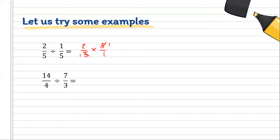We cannot divide 2 and 1, so we can now start multiplying. Multiplying fractions: top times top, bottom times bottom. So 2 times 1 is 2, and 1 times 1 is 1. We know that if a fraction has a denominator of 1, it can be expressed as a whole number. So our final answer is 2.